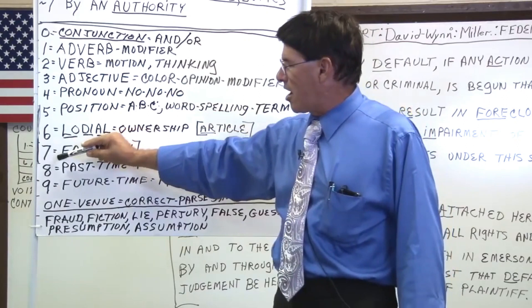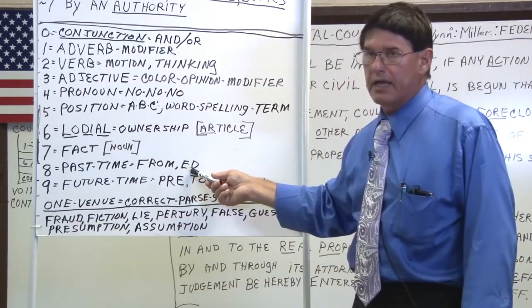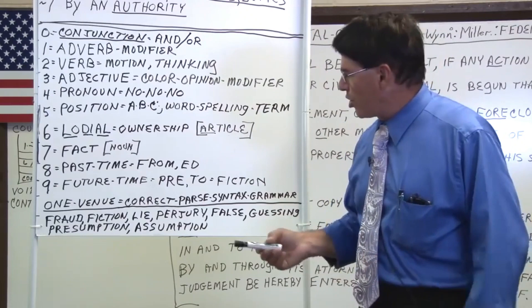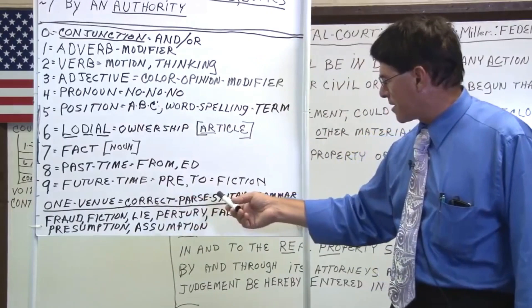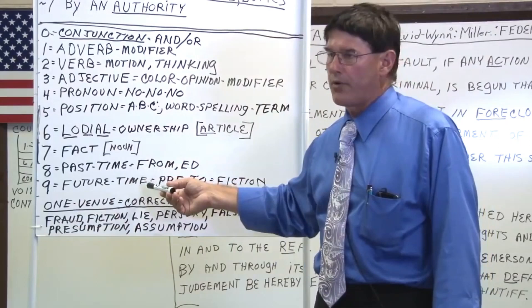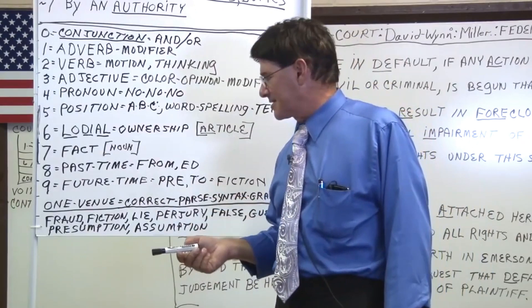The past can be a word like 'from,' or any word ending in E-D represents a past. When we went to school they taught us a sentence must be one thought — one venue or one condition of thought, which is correct parse syntax grammar. However, in the world of fraud, 'going to the store from the house' has two different time factors — 'to' and 'from' — which makes it a lie because you have two conditions of time and it's no longer a single-thought sentence. This generates fraud, fiction, lies, perjury, false statements, guessing, presumption, and assumption.